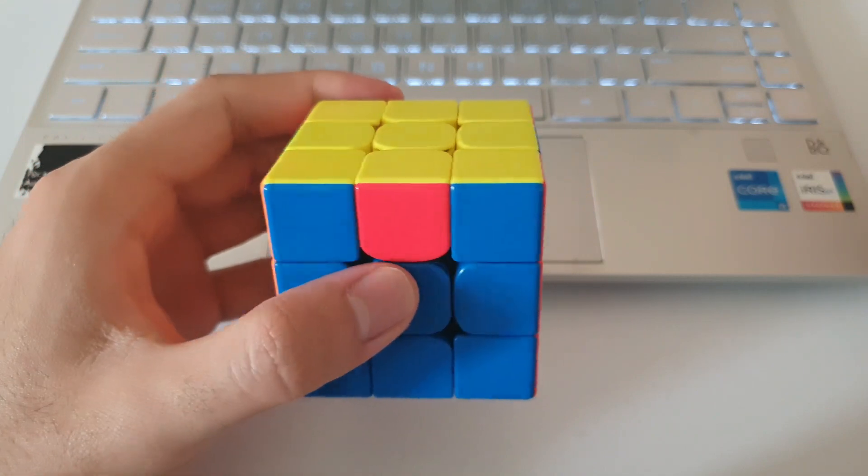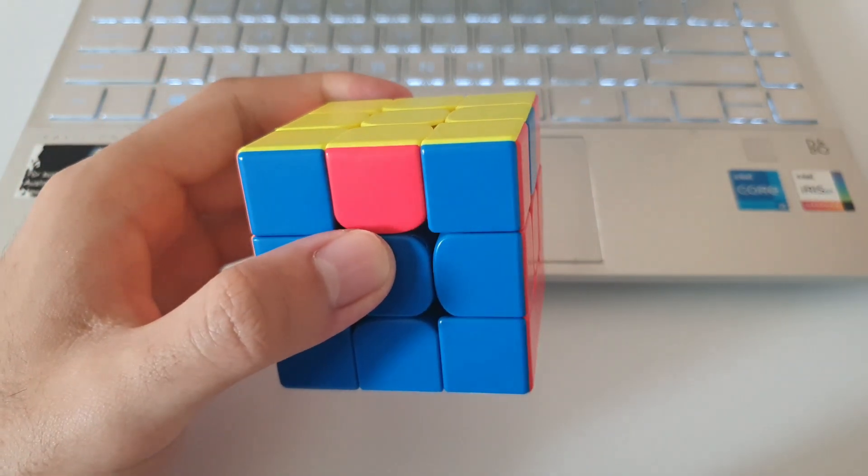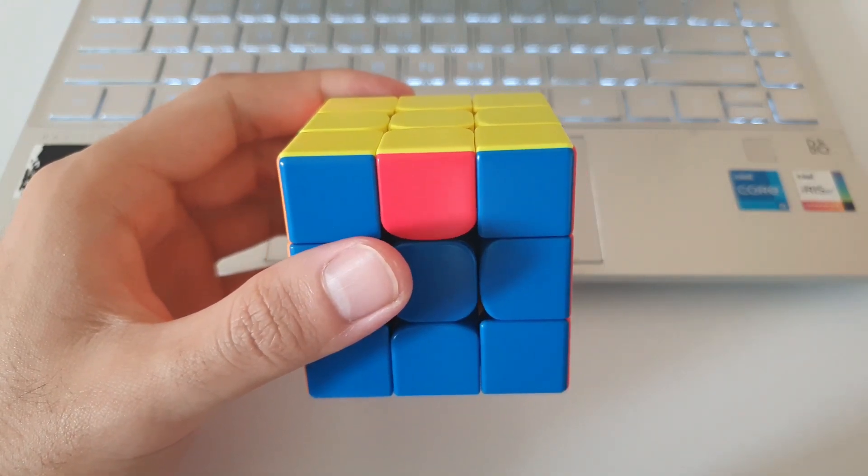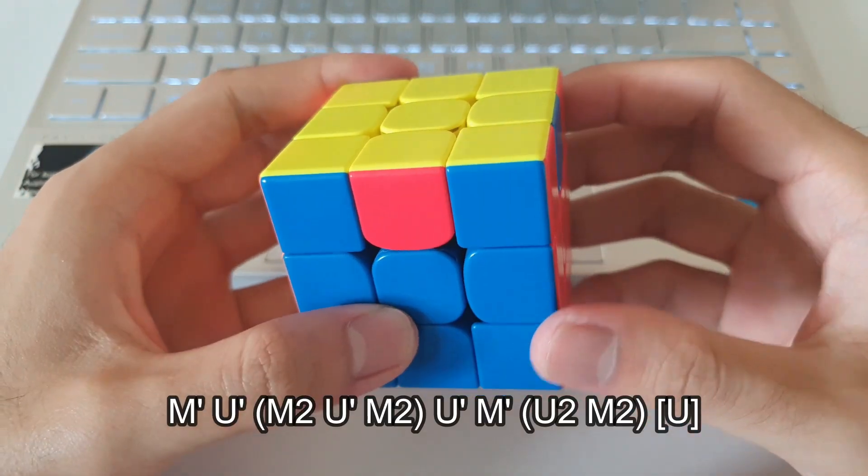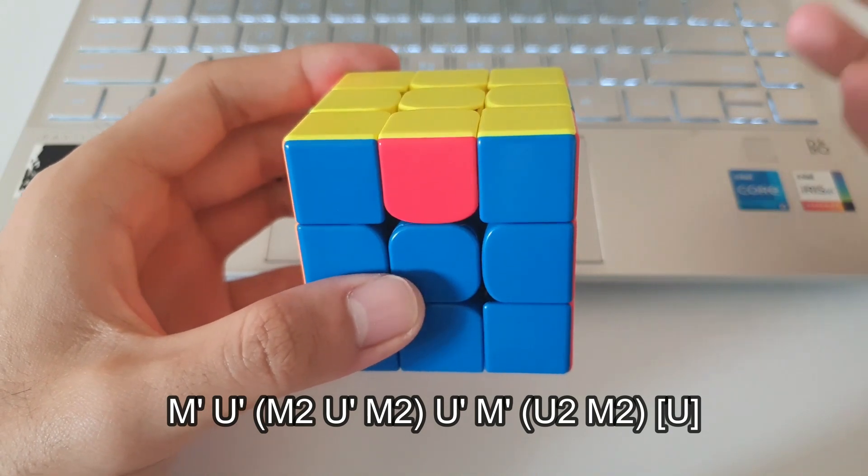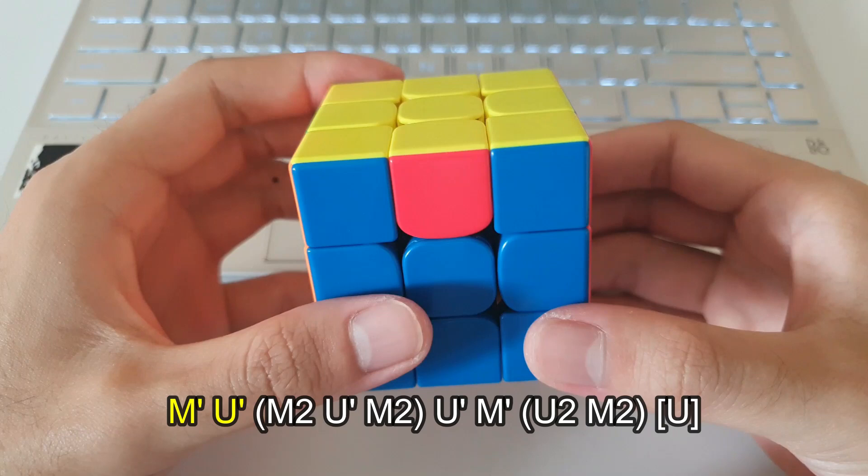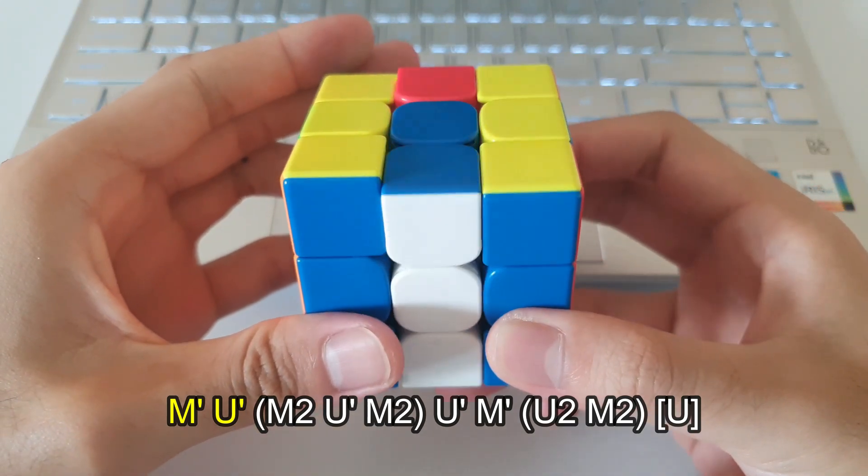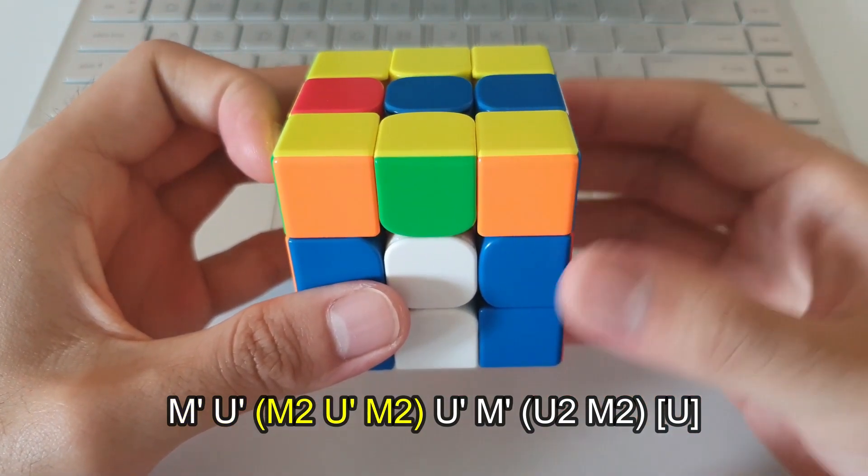In terms of memorization, both algorithms are actually pretty similar. They're fairly easy to remember, and they both have some pretty neat features about the algorithm that make them easy to remember. Starting with the M prime algorithm, obviously as the name suggests, it starts off with an M prime followed by a U prime. The first two moves should be quite easy to remember, M prime followed by U prime.